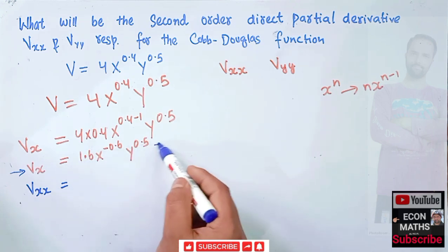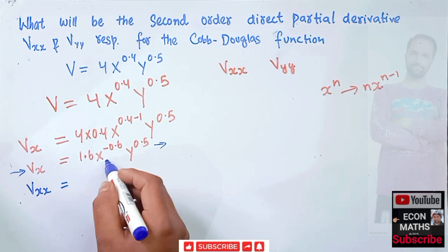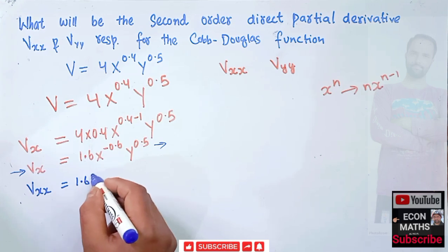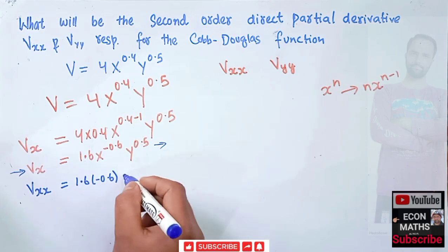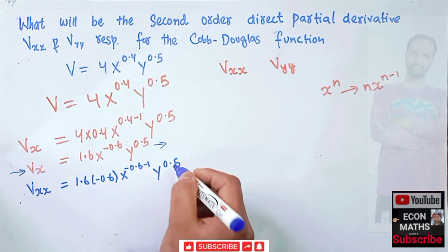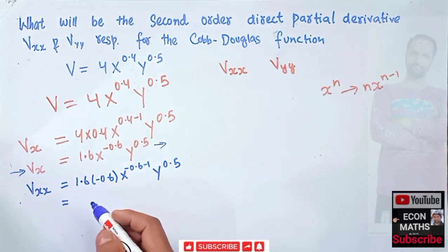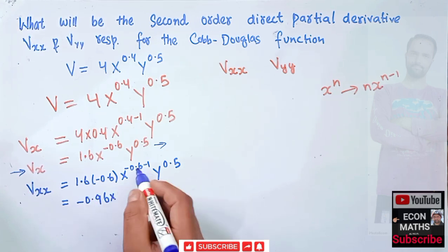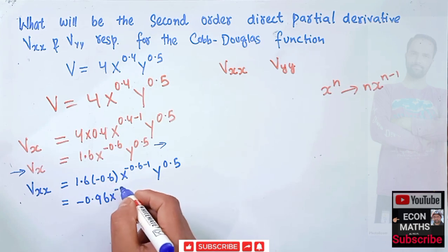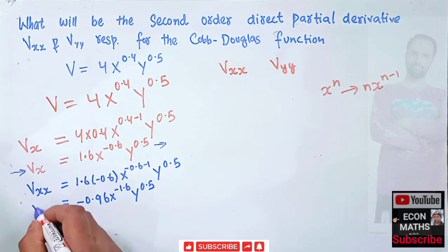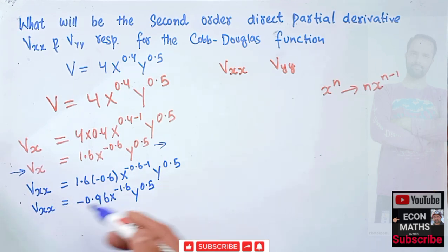Differentiating again with respect to x, the exponent -0.6 becomes the coefficient by the power function rule, giving us 1.6 * (-0.6) * x^(-0.6-1) * y^0.5. So 1.6 * (-0.6) = -0.96, and x^(-0.6-1) = x^(-1.6). Therefore vxx = -0.96 * x^(-1.6) * y^0.5.